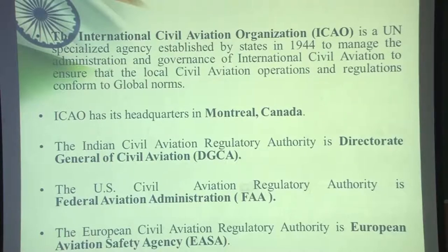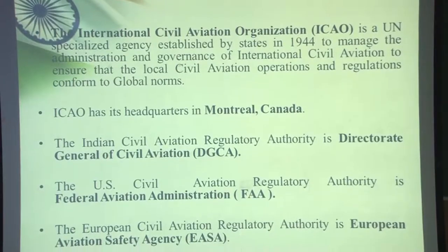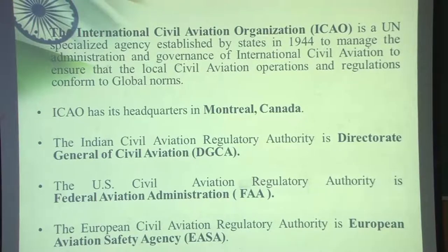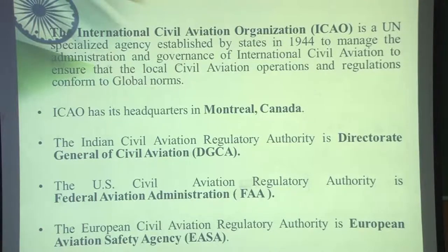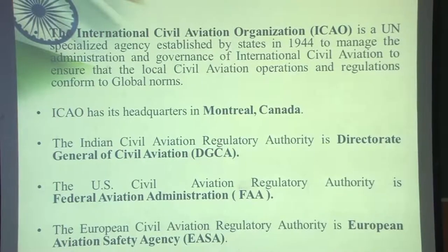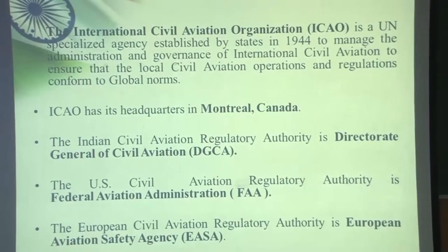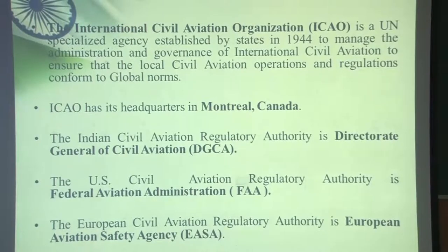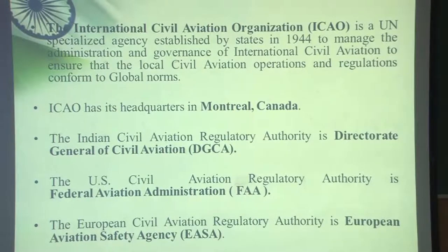Aircraft operation all over the world is governed by an international body, a UN specialized agency called the International Civil Aviation Organization, ICAO. It was established by states in 1944 so that aviation all over the world can be administered and governed and international rules and regulations are in sync everywhere. ICAO has its headquarters in Montreal, Canada. In India the civil aviation regulatory authority is the DGCA. In the US it is the FAA and in Europe it is the European Aviation Safety Agency, EASA.